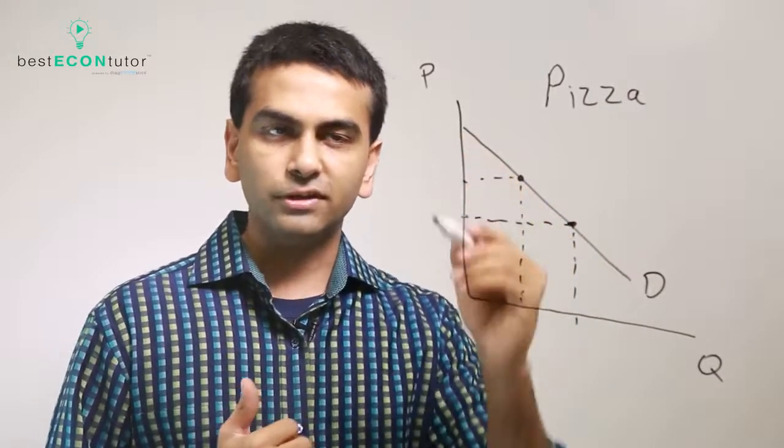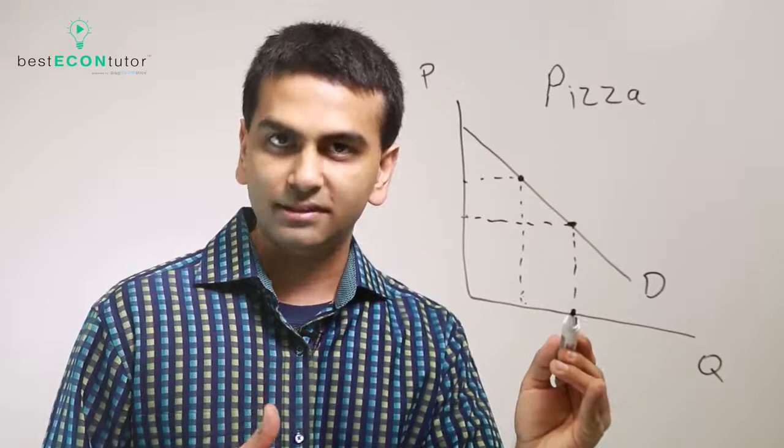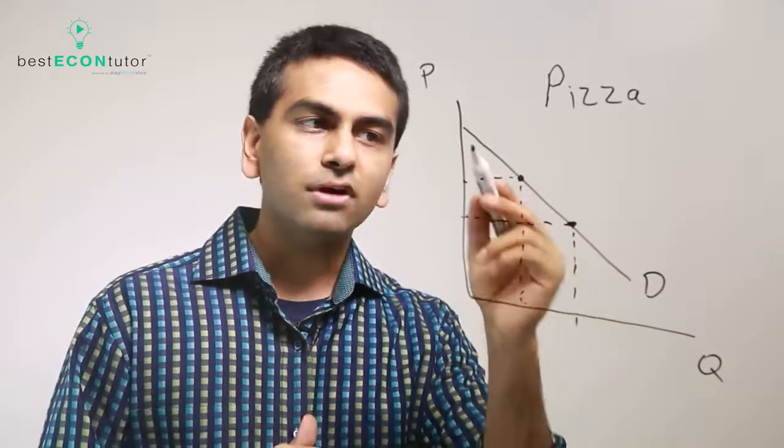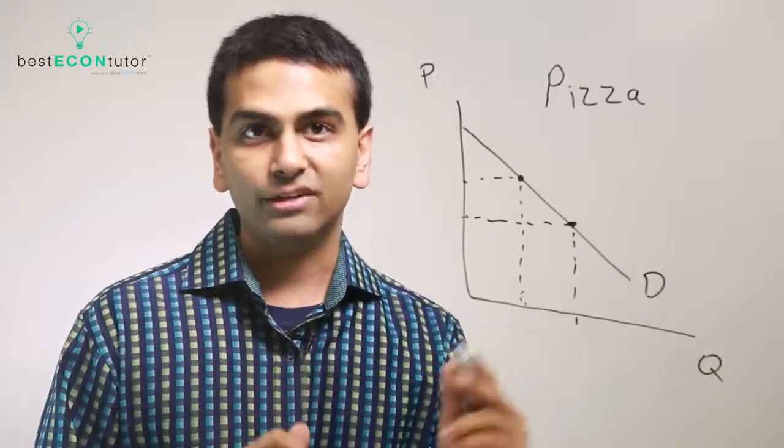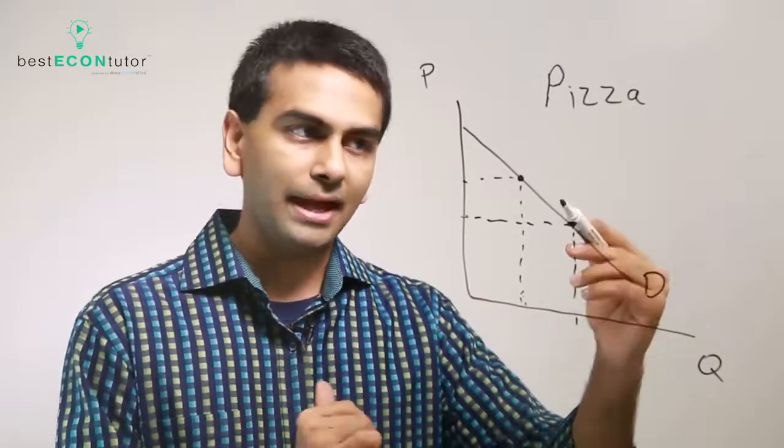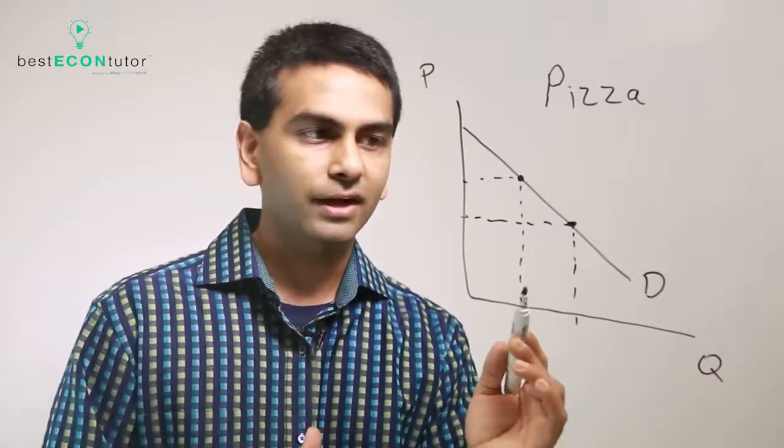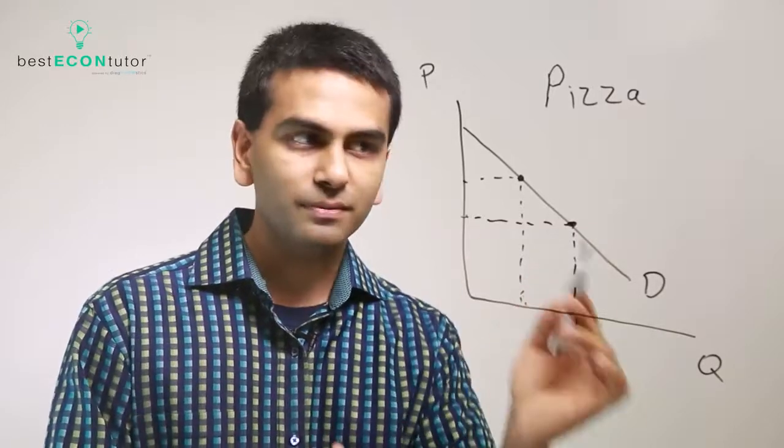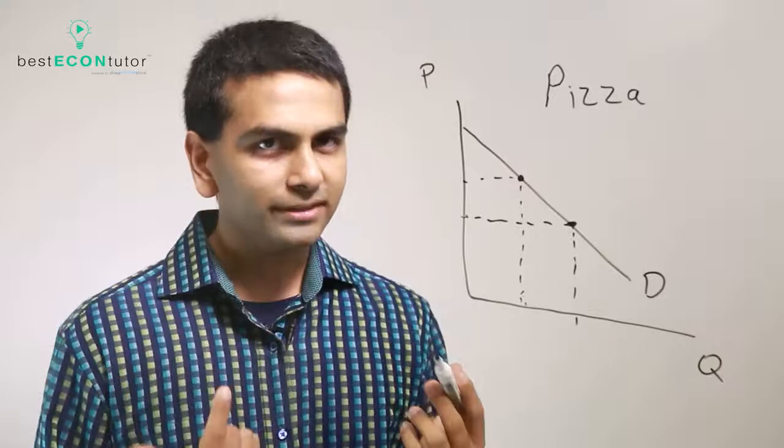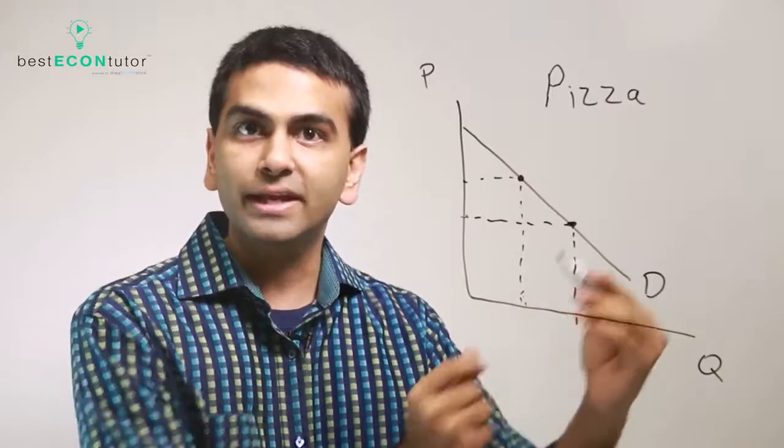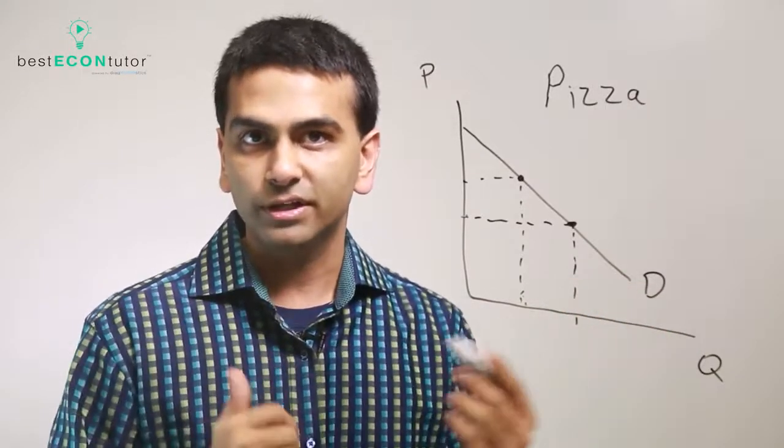So a change in the price of your good, yeah, you will buy more pizzas if it's a lower price, but that's on the same curve. That's called a change in quantity demanded, not a change in demand. A change in demand is the whole curve shifting. A change in quantity demanded is the movement along this curve, which happens if the price of that good changes. So what type of things then would cause a change in demand? What would cause the entire curve to shift?